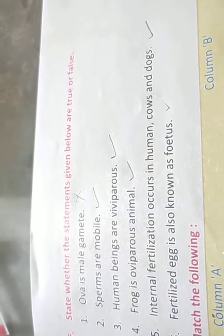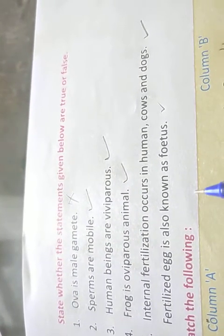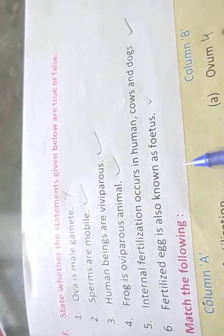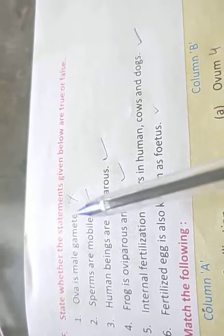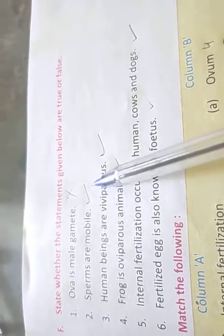Now come to page number 161. State whether the statements given below are true or false. Ova is the male gamete? No, wrong. Sperms are mobile? Right. Human beings are viviparous? Right. Frog is the oviparous animal? Right.